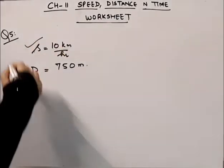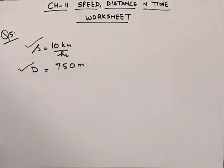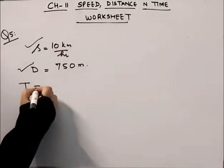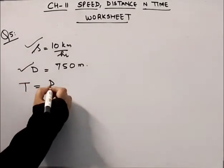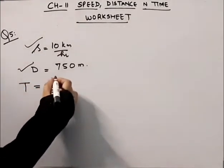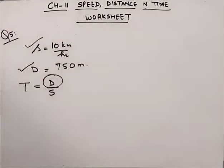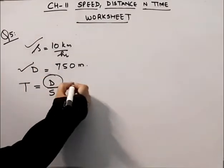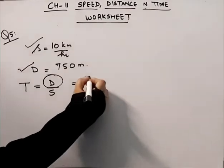Speed is given, distance is given, then we have to find out time. Time is equal to distance upon speed. Distance is always in the numerator.